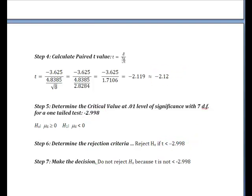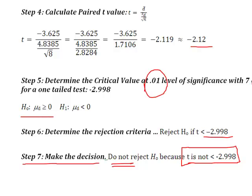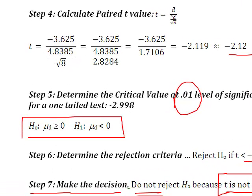So here I am now with my final step to make the decision. Well, is negative 2.12 less than negative 2.998? No. So I do not reject H₀ because t is not less than negative 2.998. So that's my final decision. So what I can conclude is there is not significant evidence or enough evidence to support at a .01 level of significance that there has been a decrease, been a decrease right here, in the level of crime since the institution of this program.